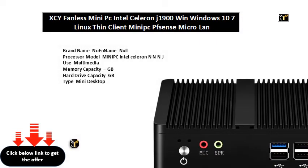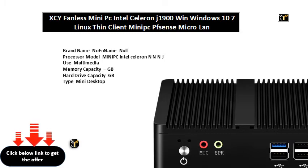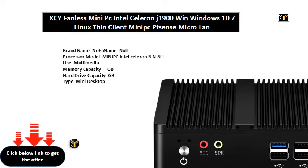Brand name: noename underscore null. Processor model: Mini PC Intel Celeron. Memory capacity: GB. Hard drive capacity: GB. Type: mini desktop. Model number: XAJ. Processor main frequency: GHz. Graphics card type: integrated. Processor model: Celeron J. Memory types: DDR3L slash megahertz. Hard drive types: MSATA SATA SSD slash HDD. Video output: HDMI x1, VGA x1. Ethernet: gigabit LAN.